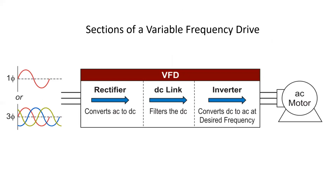The sections of a variable frequency drive are separated into three. Some VFDs are designed to take single-phase supply voltage and drive a three-phase AC motor — advantageous for running three-phase woodworking equipment at a residential acreage where only single phase is provided. Inside a VFD, we have a rectifying circuit which converts the incoming AC to DC, a DC link which is the DC bus where the voltage is filtered, and then the inverter section which converts DC to AC at whatever voltage and frequency is required.